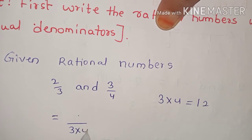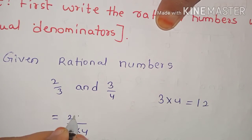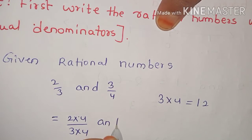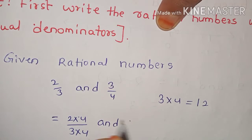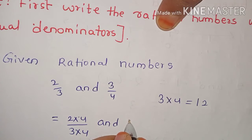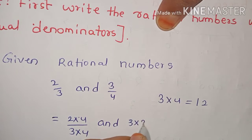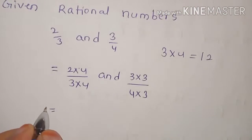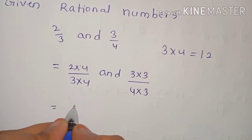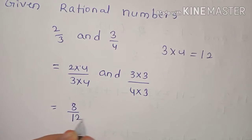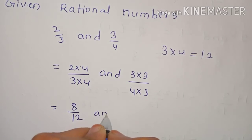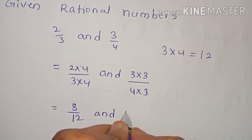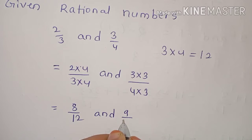That is, 3 into 4 gives denominator 12, and 2 into 4 gives the numerator for the first fraction. And 4 into 3 is 12. We get the numerator number between 8 and 9 by 12.